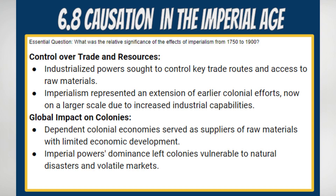Control over trade and resources. Imperialistic ambitions were not only driven by economic motivations, but also by the strategic goal of controlling key trade routes and access to raw materials. This represented a significant shift from earlier colonial efforts, with industrialized powers now seeking not only territorial control but also dominance in global trade networks. The industrial capabilities of the time allowed for a scale of imperialistic pursuits previously unseen.